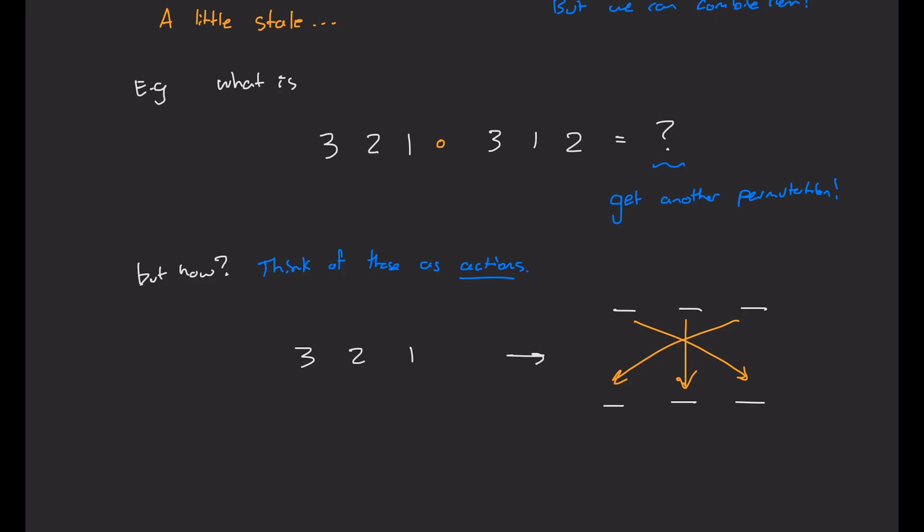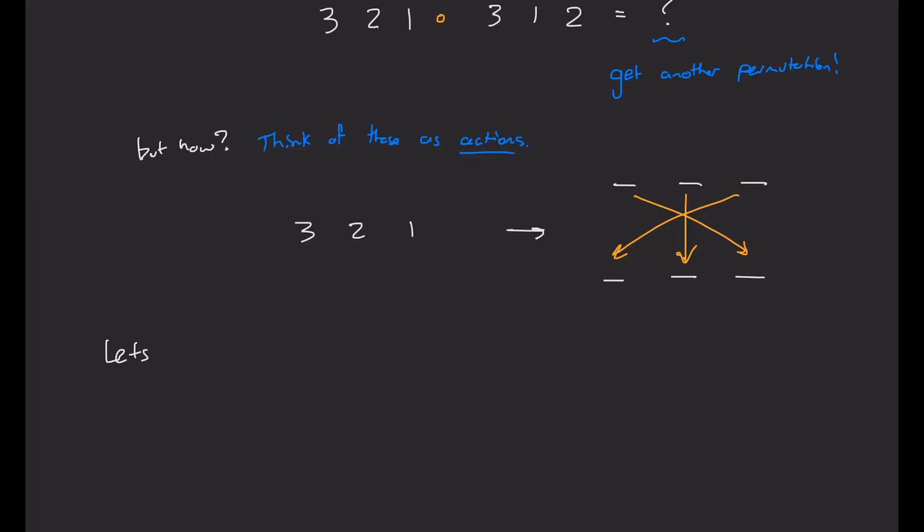Now this might seem a little ad hoc — why would we want to do such a thing? But it turns out that this is a huge area of abstract algebra involving such seemingly disparate areas as combinatorics, representation theory, and even polynomials. So in this video, I want to make clear what this multiplication means and see if we can generalize the permutation structure and talk about it as a group.